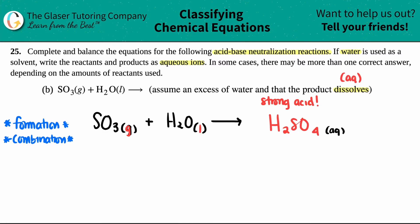But now they're saying that we are assuming an excess of water, okay, and that the product dissolves. They also told us that if water was used as a solvent, write the reactants and the products as aqueous ions. So let's just do that, right? Now I can't touch my sulfur trioxide because that's a gas. I can't touch the water because that's a liquid. Liquid and gases do not dissociate. They don't break down.